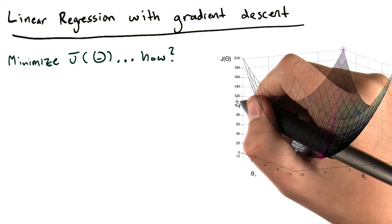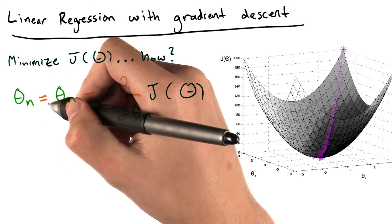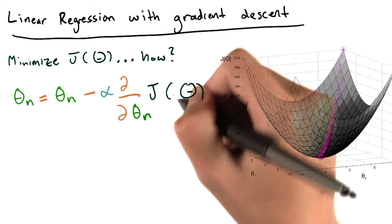Gradient descent updates the values of theta according to the following equation. Theta n is equal to theta n itself, minus alpha, times d d theta n, J of big theta.